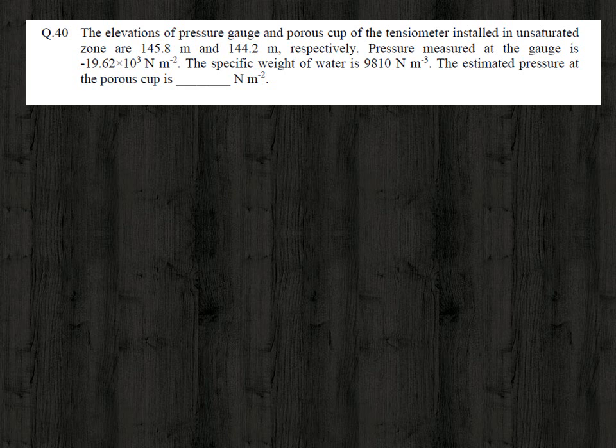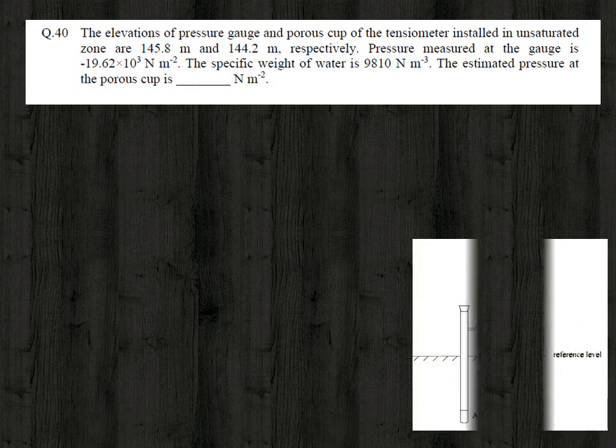The estimated pressure at the porous cup is dash Newton per meter square. This problem is related to a tensiometer, used to find out the soil moisture content. This is a schematic diagram of a tensiometer where point A represents the porous cup and point B represents the pressure gauge — which is actually a mercury manometer.